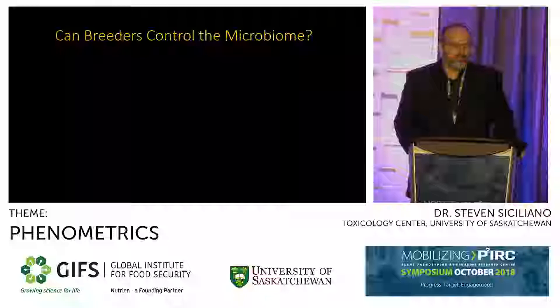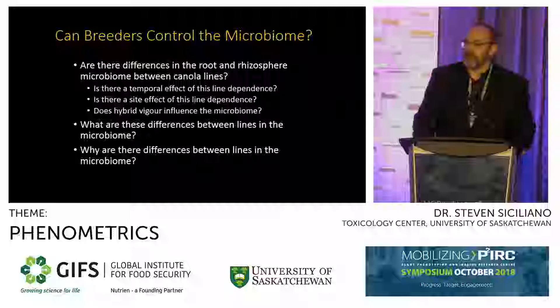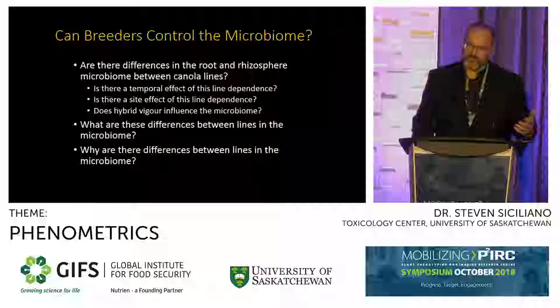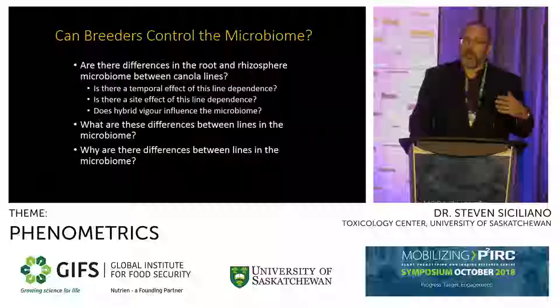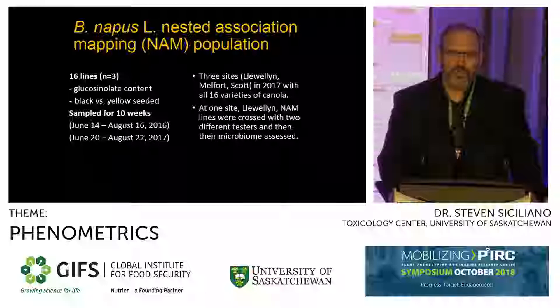Our key question as part of theme 1.3 was, can breeders control the microbiome? To address this question, we had three linked questions: Are there differences in the root and rhizosphere microbiome between canola lines? If there are differences, what are these differences? And then finally, why are these differences? The first and second questions are not exactly the same—I can often tell you there are differences, but I won't know what those differences are.